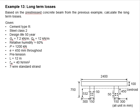Let us try an example to determine the long-term losses based on the prestressed concrete beam from the previous example. Calculate the long-term losses. It is given that the cement type is R, steel class 2, the design life of the structure is 50 years, the G_k and Q_k are 7.2 and 12 kilonewton per meter.